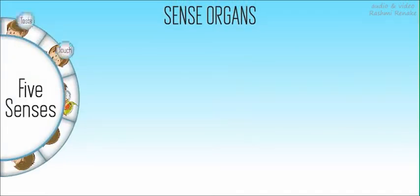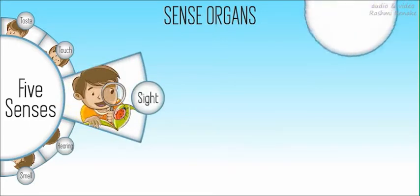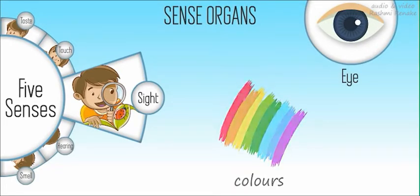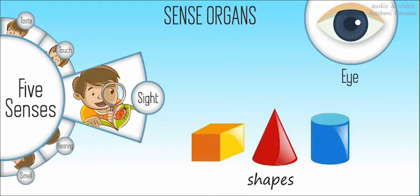Let's start with sight. We use our eyes to see. We can see different colors, shapes, and sizes. We can also see things close to us or far away.